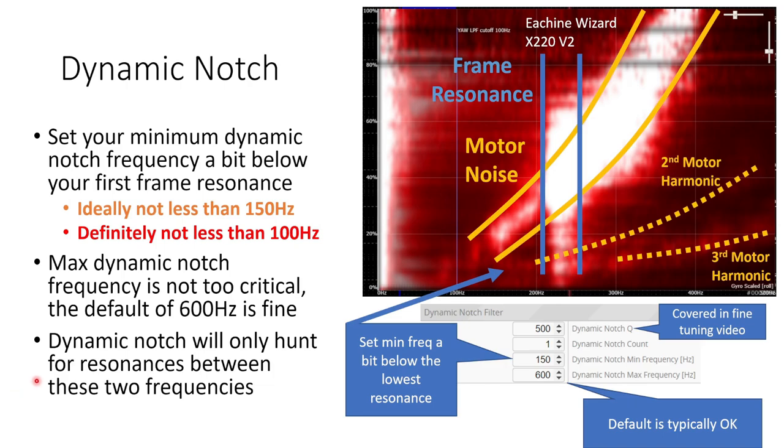Now you want to set your minimum dynamic notch frequency to a bit below your first frame resonance but you don't want to set the frequency too low so ideally not less than 150 hertz and definitely not less than 100 hertz otherwise it will create too much delay. The maximum dynamic notch frequency is not too critical because the resolution of the dynamic notch has improved a lot in 4.3 so I think the default of 600 hertz is fine but if you want even more resolution in the dynamic notch you could lower it a bit to maybe 450 or even 400 in this build because we don't have any sign of frame resonances higher than that. If you don't have black box logging don't worry I would just leave the minimum and maximum frequencies at default. The dynamic notch will then hunt for resonances between the two frequencies so it will hunt between 150 and 600 hertz in this case.